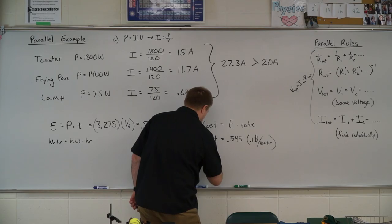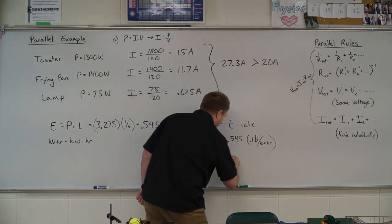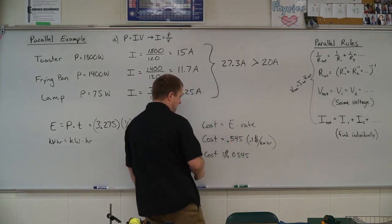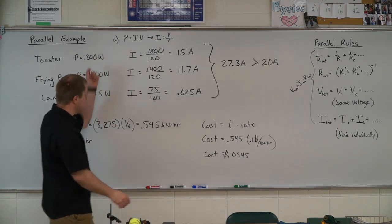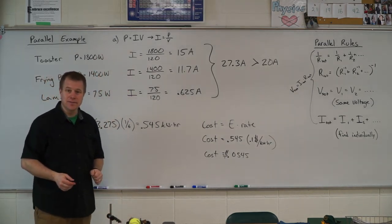My cost is going to be 0.545 times 0.1 dollars per kilowatt hour. I end up with a cost of 0.0545 dollars, which is 5.5 cents. To run that for 10 minutes, all of this stuff costs about a nickel.